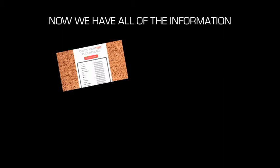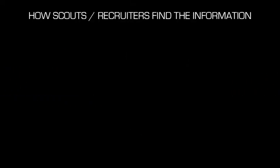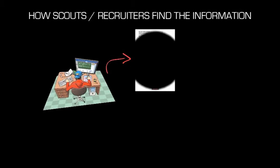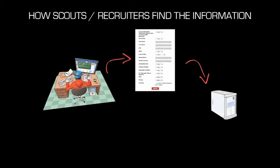Now that we have all the information, we take the free profile and the video reel, combine them together, and put them in our database. So how do scouts and recruiters find this information? They go to DirtBaseball.com and enter a search. There are many parameters that they can search for, and that search goes into our computer.